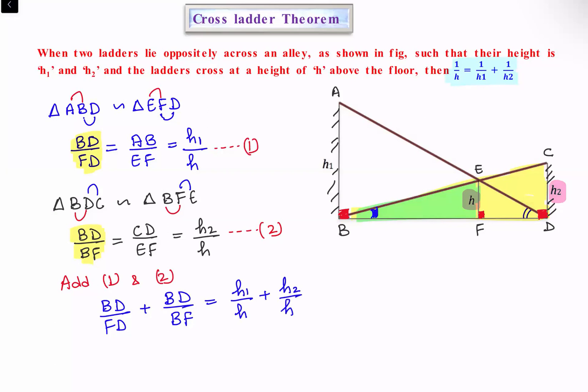Taking reciprocals on both sides, FD/BD equals h/h1, and BF/BD equals h/h2. On the left side, BD is common in the denominator, so we get (FD + BF)/BD.